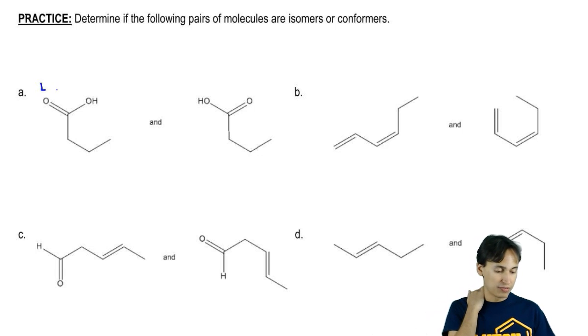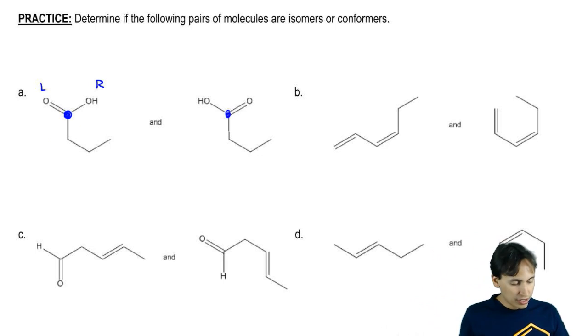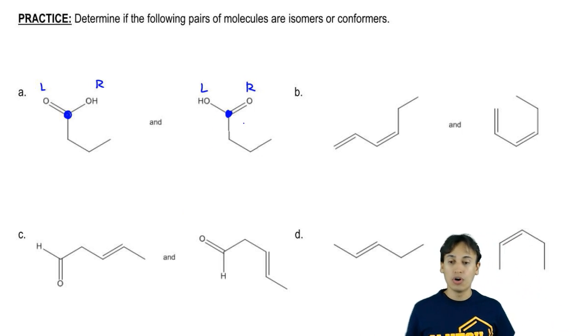This is my left side and this is my right side. They're attached to a central carbon. What I see is that the left side has a double bond O, the right side has an OH, and over here it's been flipped. My left side has an OH and my right side has a double bond O.